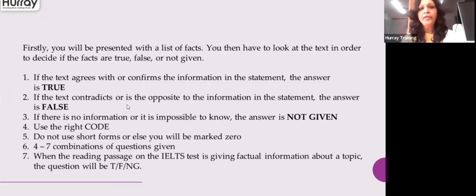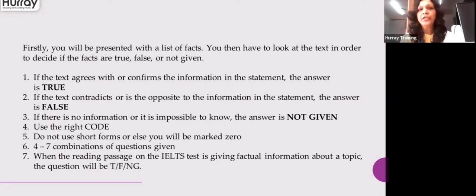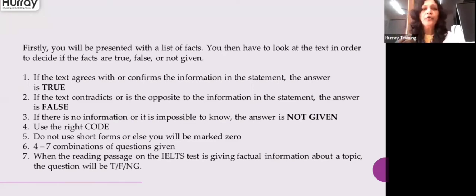But if the text contradicts or is opposite to the information in the statement, then the answer is false. If the entire statement or meaning of the sentence is opposite in the passage — it is contradicting, it is there but gives the opposite meaning — then you mark it as false. If it's a Yes, No, Not Given question, you mark it no. If it's True, False, Not Given, you mark it false.